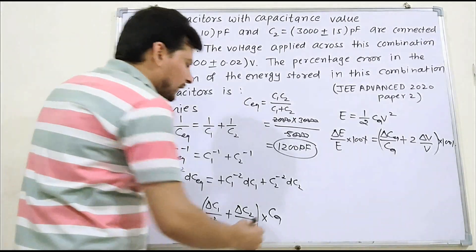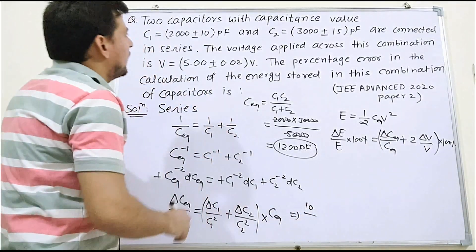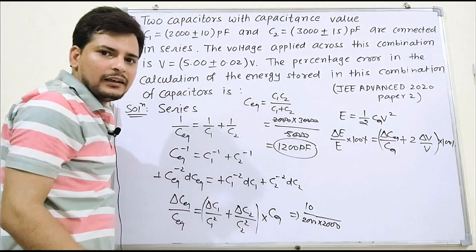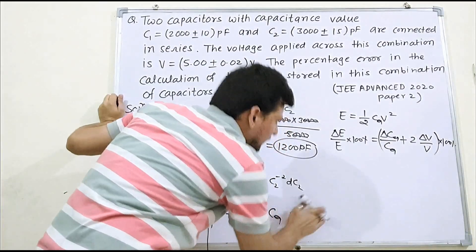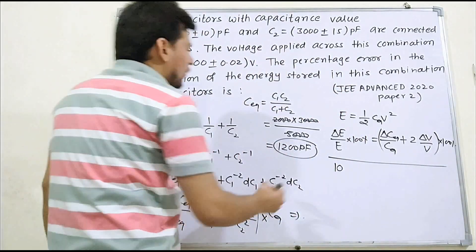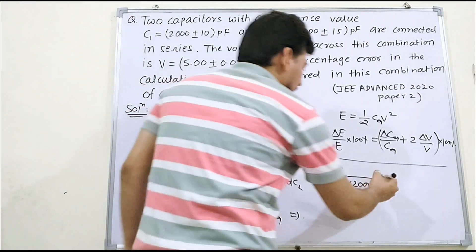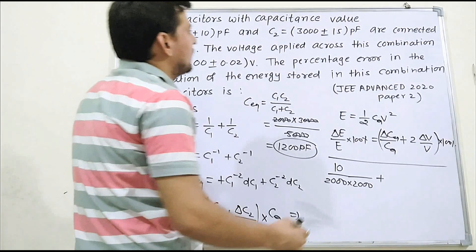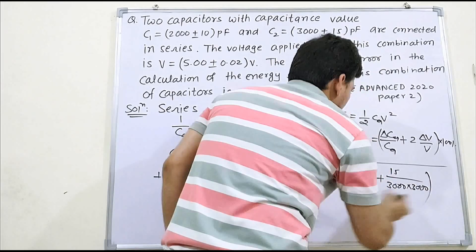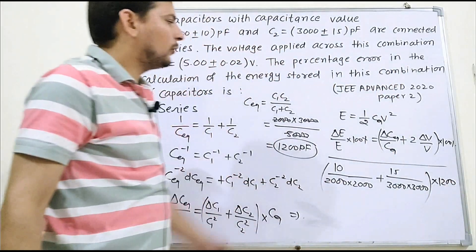Now substituting values: δC1 = 10, C1² = 2000 × 2000. Plus δC2 = 15, C2² = 3000 × 3000. Multiply the whole thing by C_equivalent = 1200. All units are in pico-farads so they cancel. Simplifying: 10 over 2000×2000 gives 1/4000, and 15 over 3000×3000 gives 1/6000.